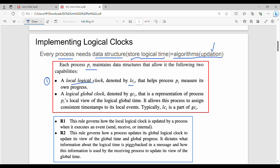First value is a local logical clock, denoted by LC_i, that helps process P_i measure its own progress.